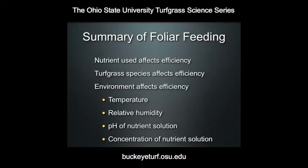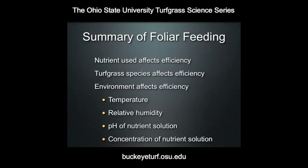It's also thought that the turfgrass species affects efficiency. For example, bentgrass is thought to absorb nutrients more efficiently than bermudagrass, primarily because there are more stomates per unit area. Now, even though stomates are not the primary avenue of absorption, when you have more stomates, you also have more transcuticular pores. The environment at the time of application also affects efficiency — as temperature increases, uptake efficiency increases; as relative humidity increases, uptake efficiency also increases. The pH of the nutrient solution is very important: the pH must be such that the element is in a form available for uptake by the leaf tissue.